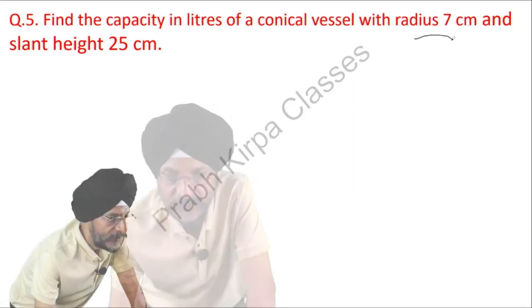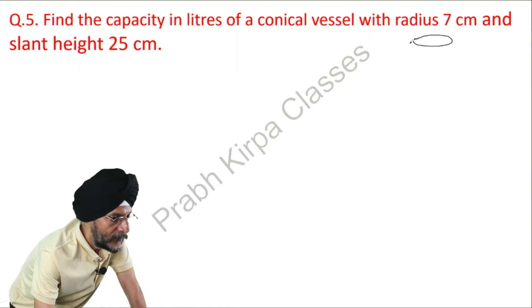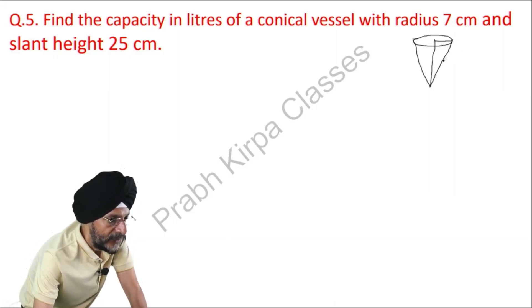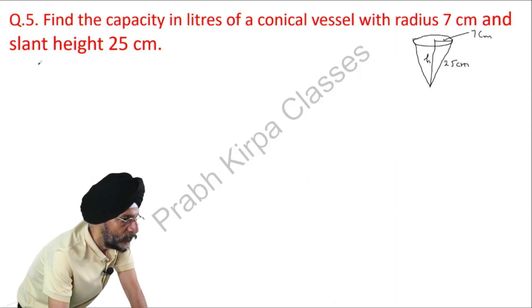So, this is the conical vessel, this is the radius, this is the height, and this is the slant height. Slant height is this one which is slanted, it is 25. Radius is this one, this is 7 centimeter. Height is this one which is not known to us.